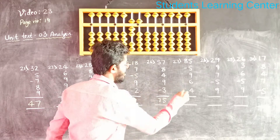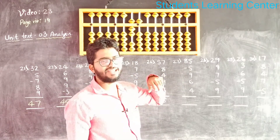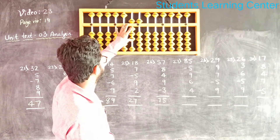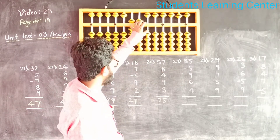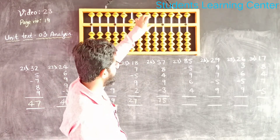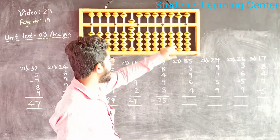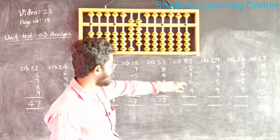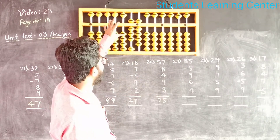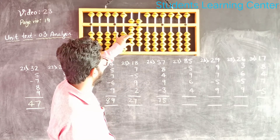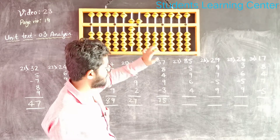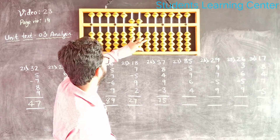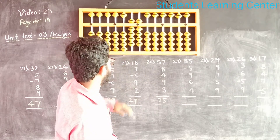Next question. Add 85, less 5, add 9, add 6 — add 6 means add 10 less 4. Add 4. Answer is 99.